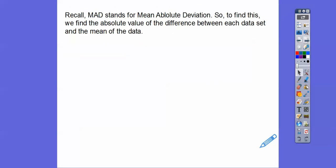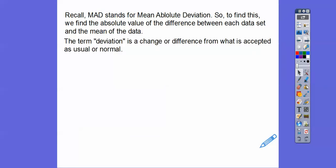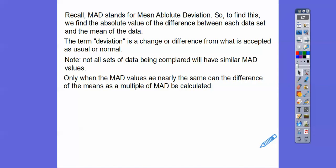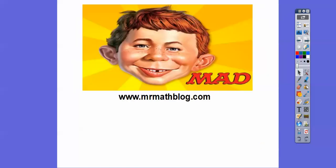So what does all that mean? Recall: MAD stands for mean absolute deviation. To find it, we find the absolute value of the differences between each data point and the mean, then average those numbers together. The term deviation just means a change or difference from what is accepted as usual or normal. Not all data sets will have similar MAD values — only when the MAD values are nearly the same can the difference of the means as a multiple of the MAD be meaningfully calculated. Hope that makes sense! Take care, you guys.